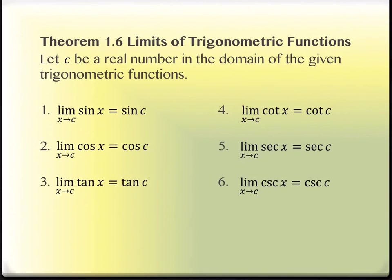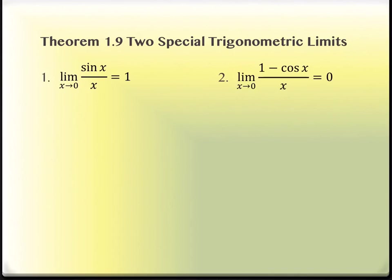We're going to shift gears slightly and talk about limits of trigonometric functions. Let c be a real number in the domain of the given trig function. If you take the limit of sine of x as x approaches c, that's the same thing as sine of c. The same is true for cosine, tangent, cotangent, secant, and cosecant — as long as c is in the domain, we simply plug in that c value. More interesting are our two special trig limits: the limit as x approaches 0 of sine x over x equals 1, and the limit as x approaches 0 of 1 minus cosine x over x equals 0. Both of these would give 0 over 0 if we tried to plug in directly.